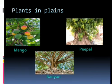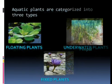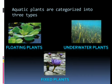Now, aquatic plants — plants that live and grow in water — are called aquatic plants. Aquatic plants are categorized into three types: first, floating plants; second, fixed plants; and third, underwater plants.